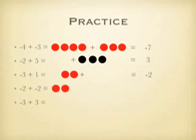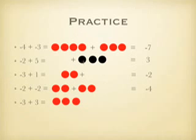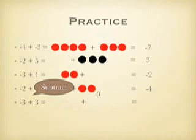Then negative 2 plus negative 2 — I'm going to add these together. None of them cancel so I'm going to end up with negative 4. And last but not least, negative 3 plus positive 3 — I have positives and negatives, they're undoing each other, they cancel. The third set cancels too, so I'm left with 0.